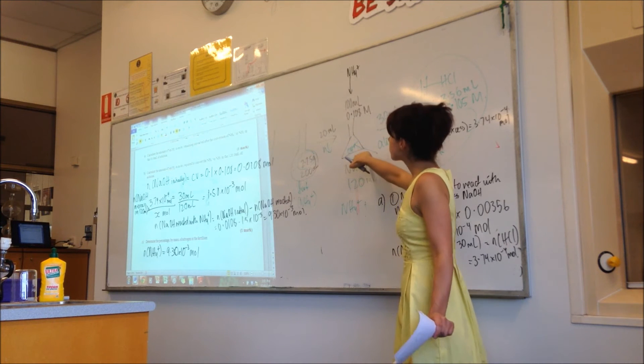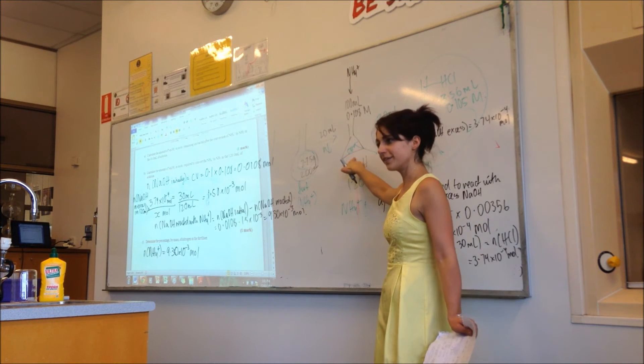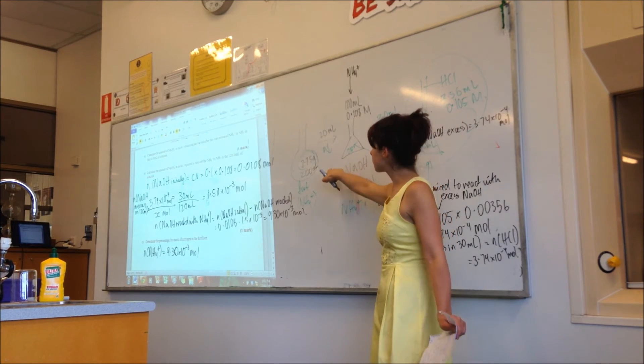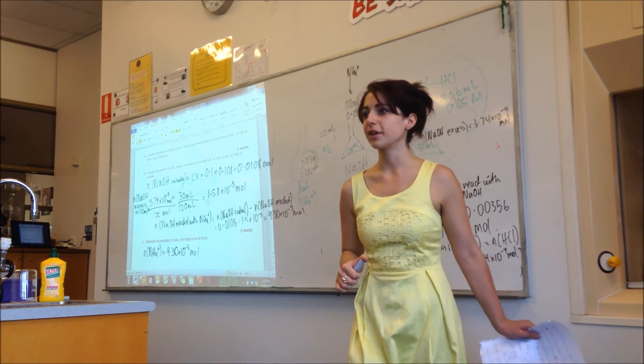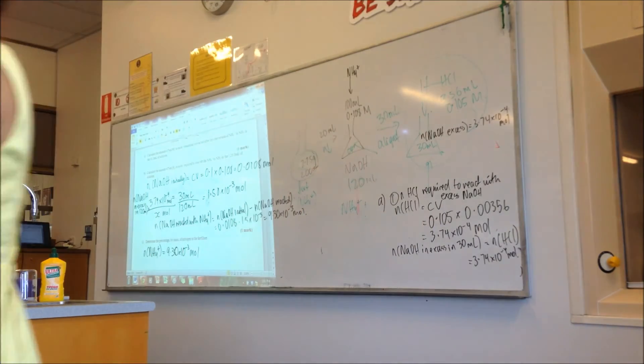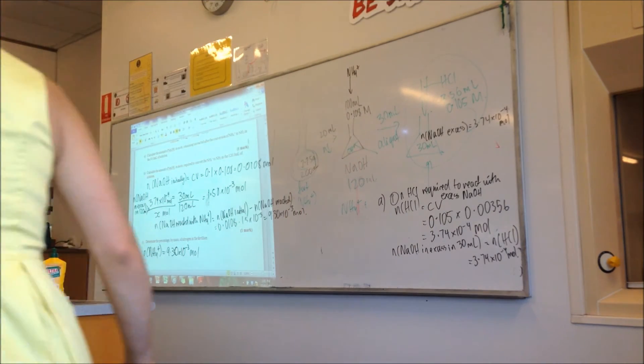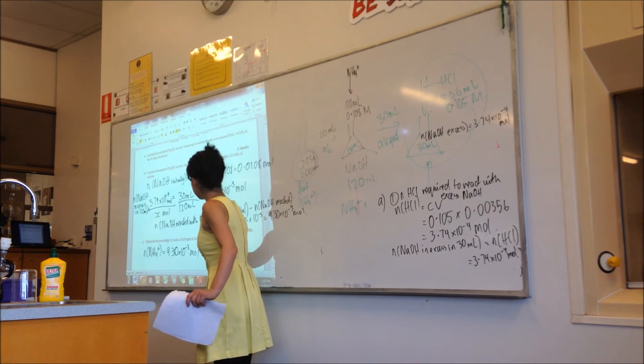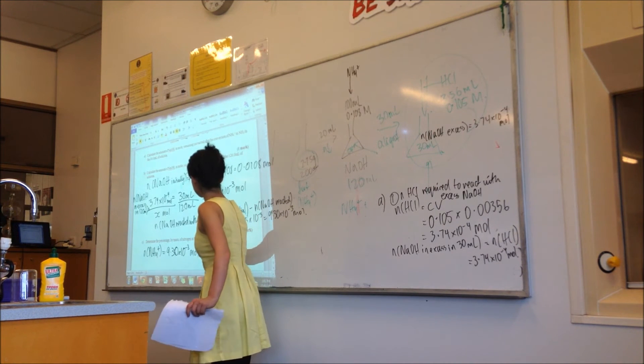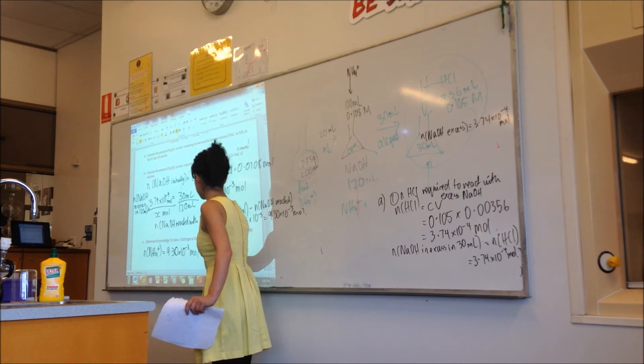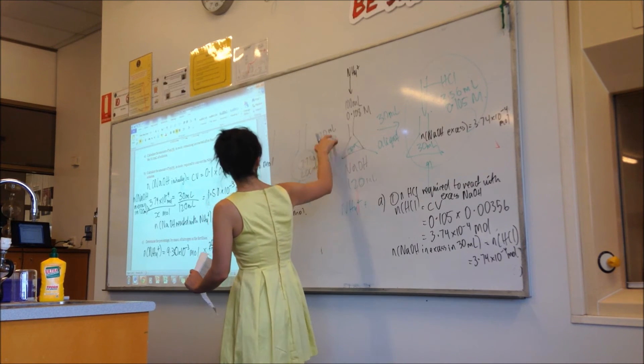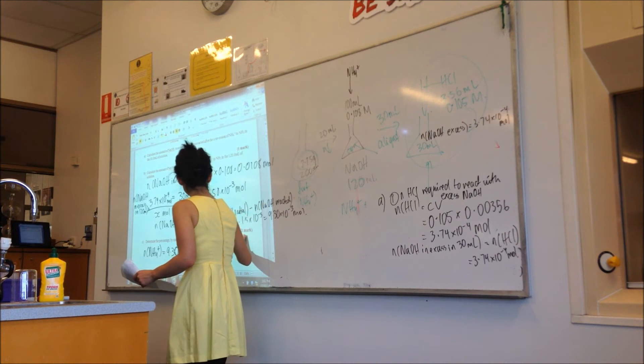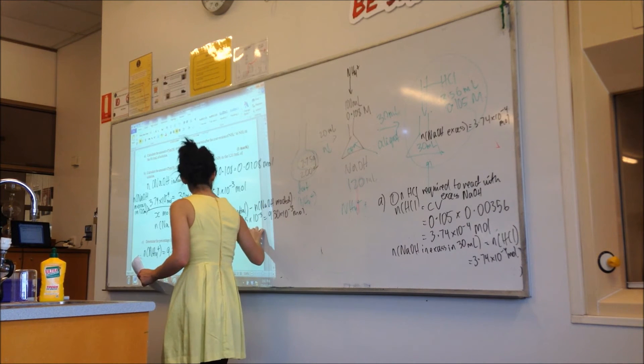So, we found out how many moles of NH4+ were in here. Is that the amount that was originally present in the 2.75 grams? No, it's smaller. So, then what do we do? Times it, what? 10. So, in other words, 200 over 20, right? That was where we got the ratio. So, equals 9.30 times 10 to the negative 2 mole.